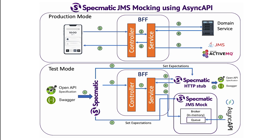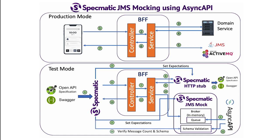When the JMS mock receives a message, it validates the message against the schema defined in the async API specification. If the message does not match the schema, then it will fail the test. The JMS mock has an in-memory ActiveMQ broker, and so the service layer can communicate with it quite seamlessly, just like it would with a real-time JMS queue in production. Finally, the service layer responds back to the controller, which in turn responds back to the contract test. When all contract tests are executed, Specmatic calls the JMS mock to validate the messages that it has received.